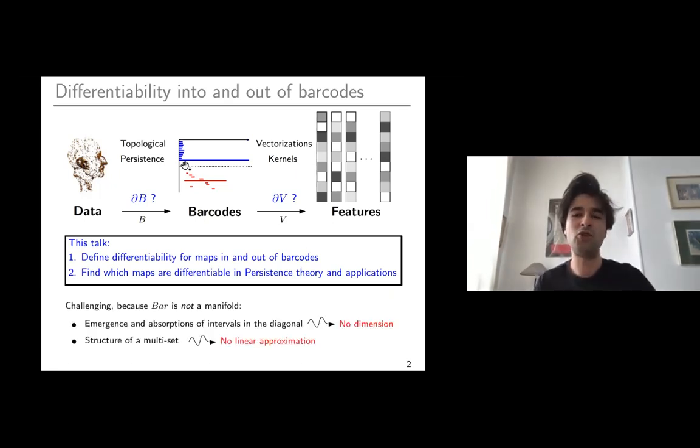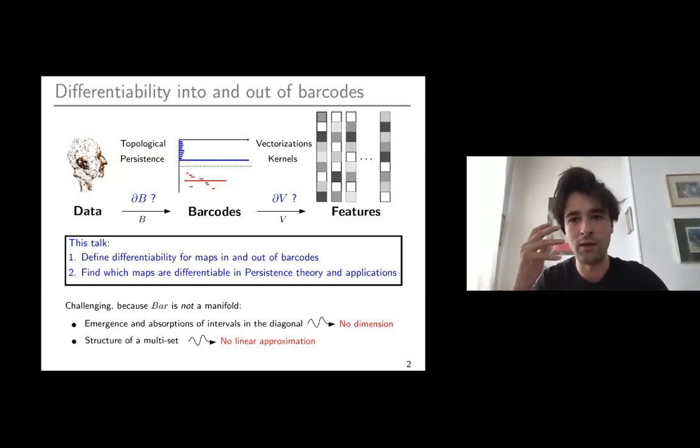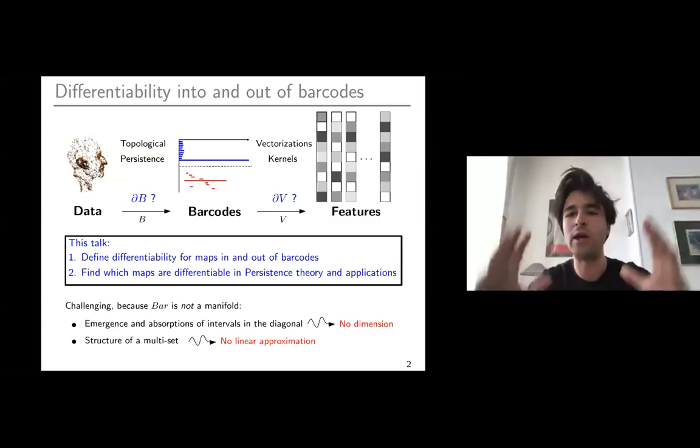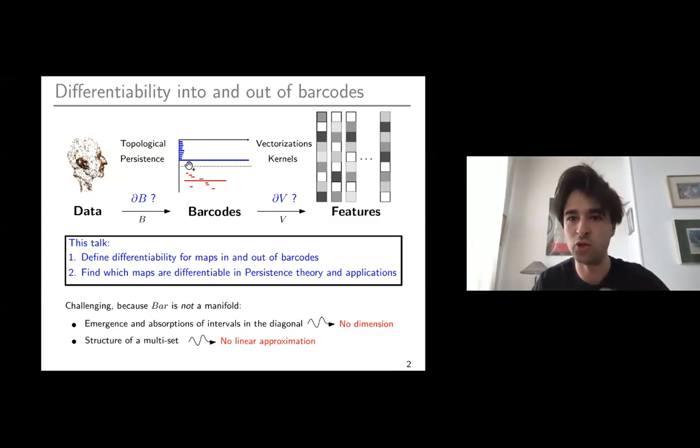It's not quite straightforward how we would define a differential calculus on barcodes because the fact that points can come in and out of the diagonal makes it impossible to find a global dimension of barcodes. And the structure of a multi-set, inherently unordered, makes it impossible to find a local linear approximation.